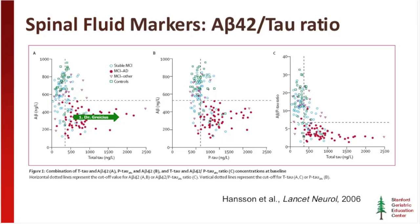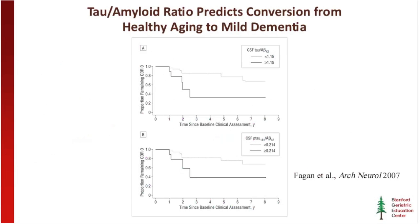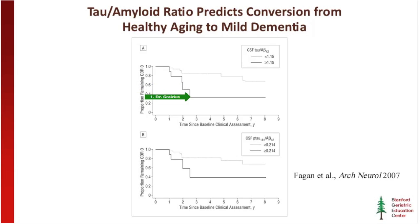You can use the tau-to-A-beta ratio in spinal fluid to predict which healthy older subjects will go on to develop mild dementia. A nice 2007 study from the WashU group followed well-screened healthy older controls who agreed to spinal fluid analysis. Those with normal CSF tau-to-A-beta ratios showed a much lower rate of conversion, whereas those with an elevated tau-to-A-beta ratio showed a much greater rate of conversion to dementia over two to three years. So CSF biomarkers are not just diagnostic but also potentially quite predictive.